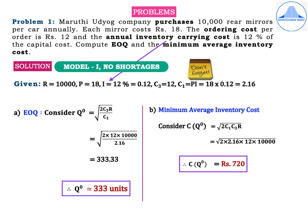Next, we find the minimum average inventory cost: C(Q⁰) = √(2C₁C₃R) = √(2 × 2.16 × 12 × 10,000) = Rs.720. Writing the units of measurement for each calculation is important.